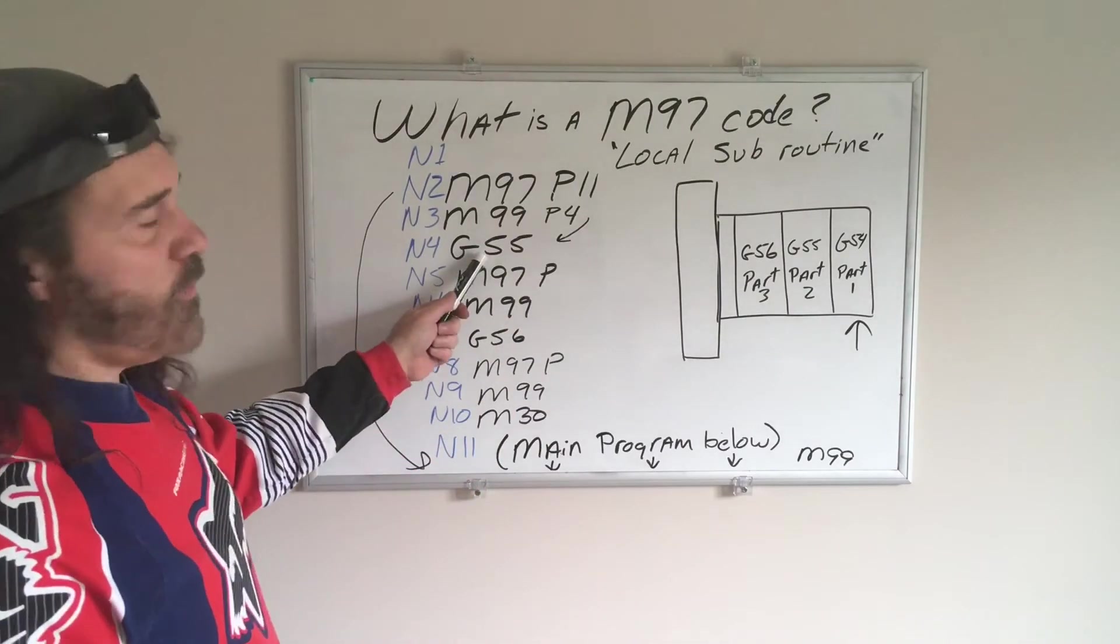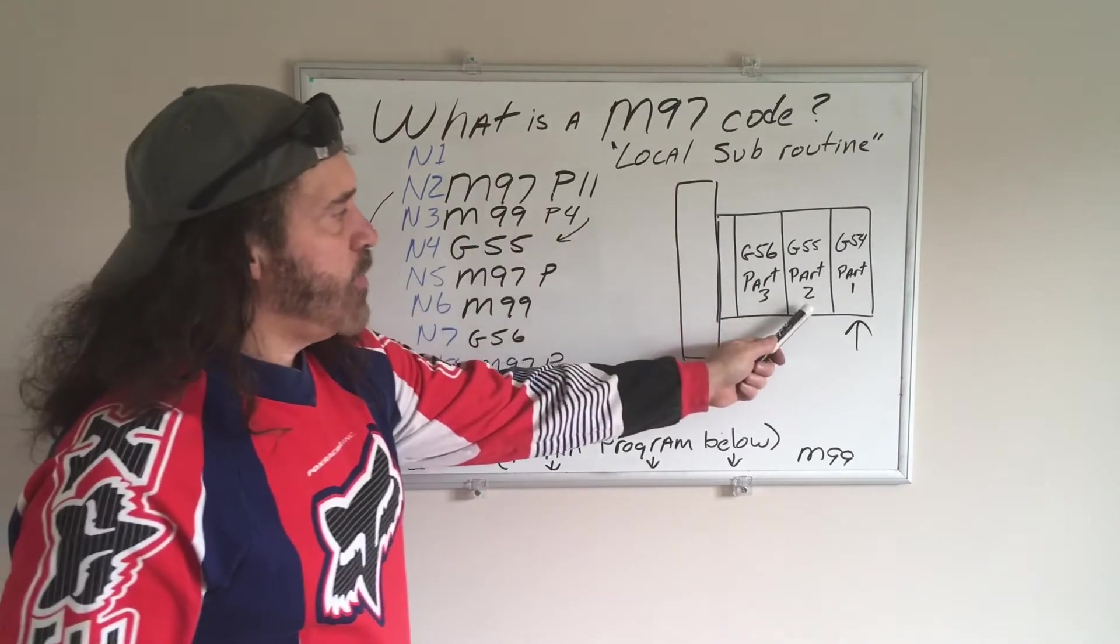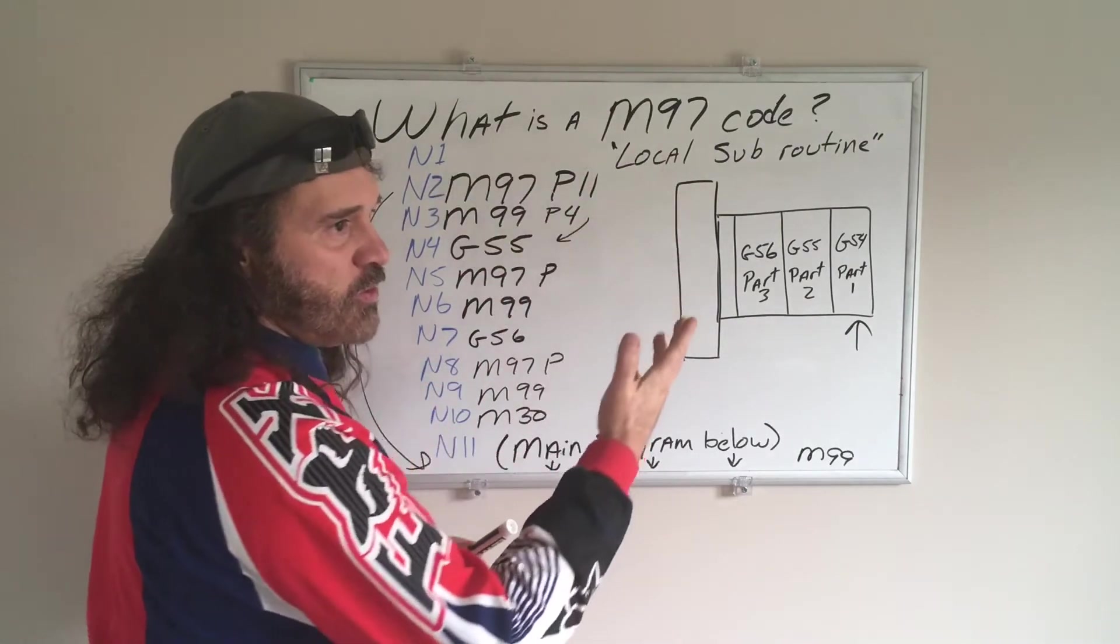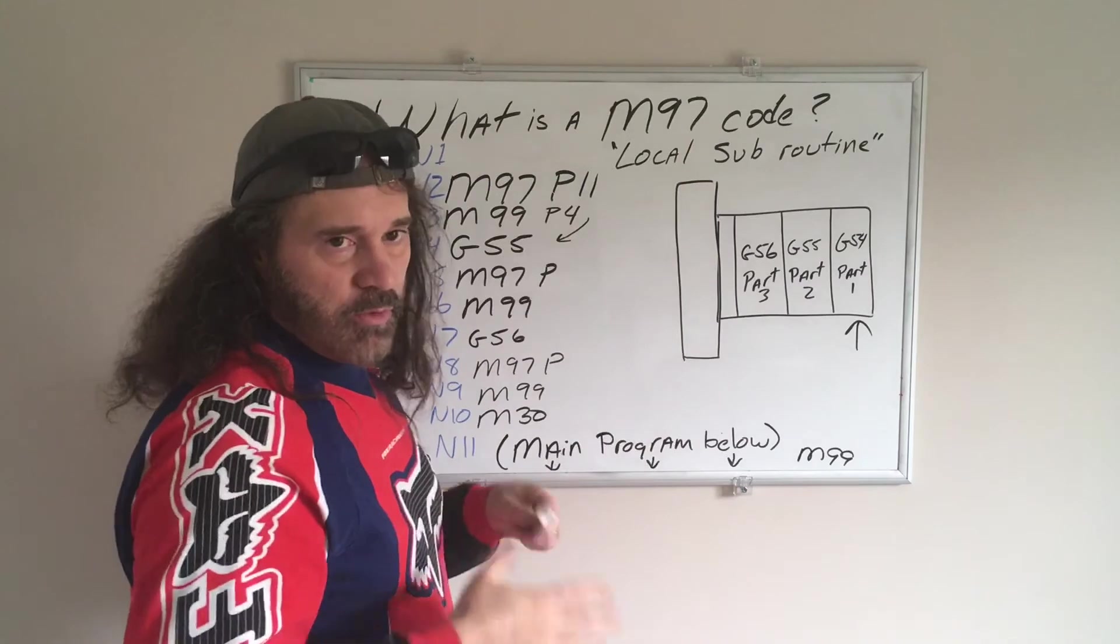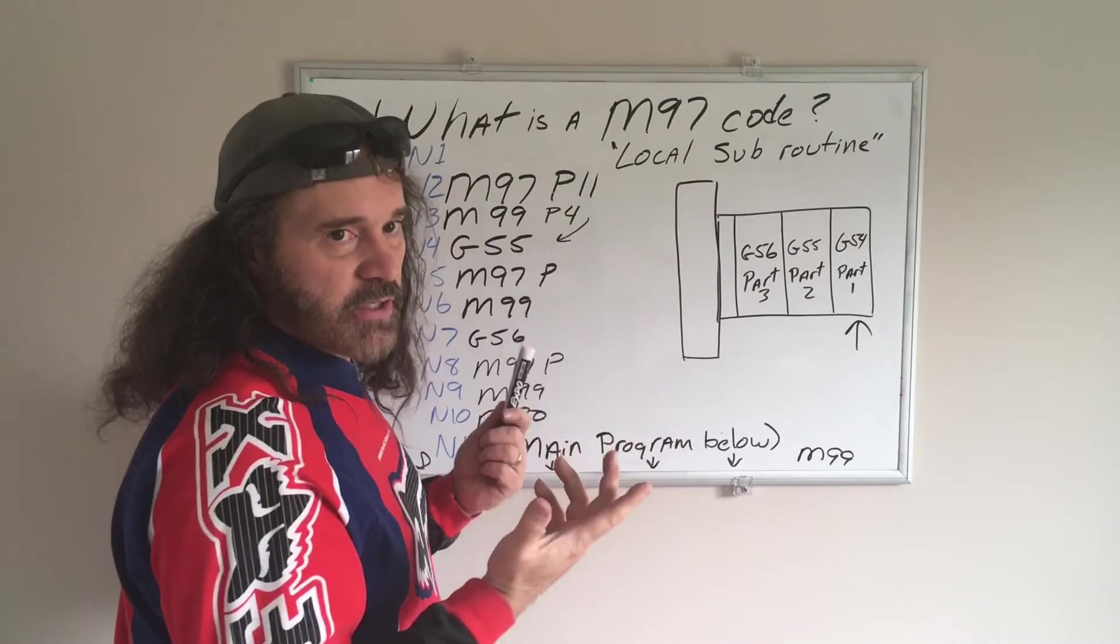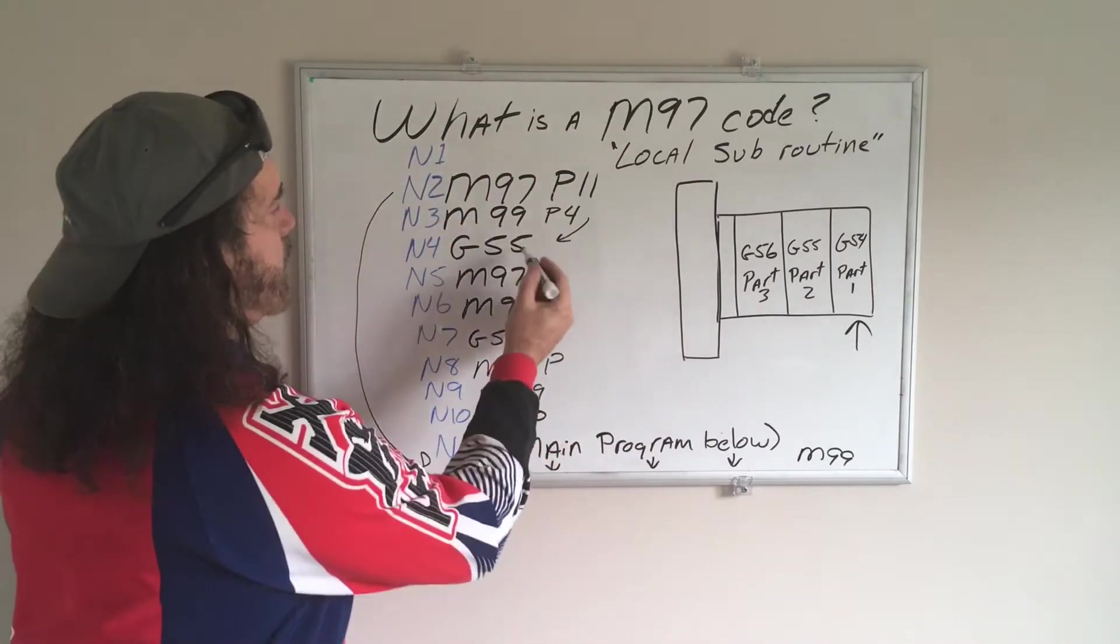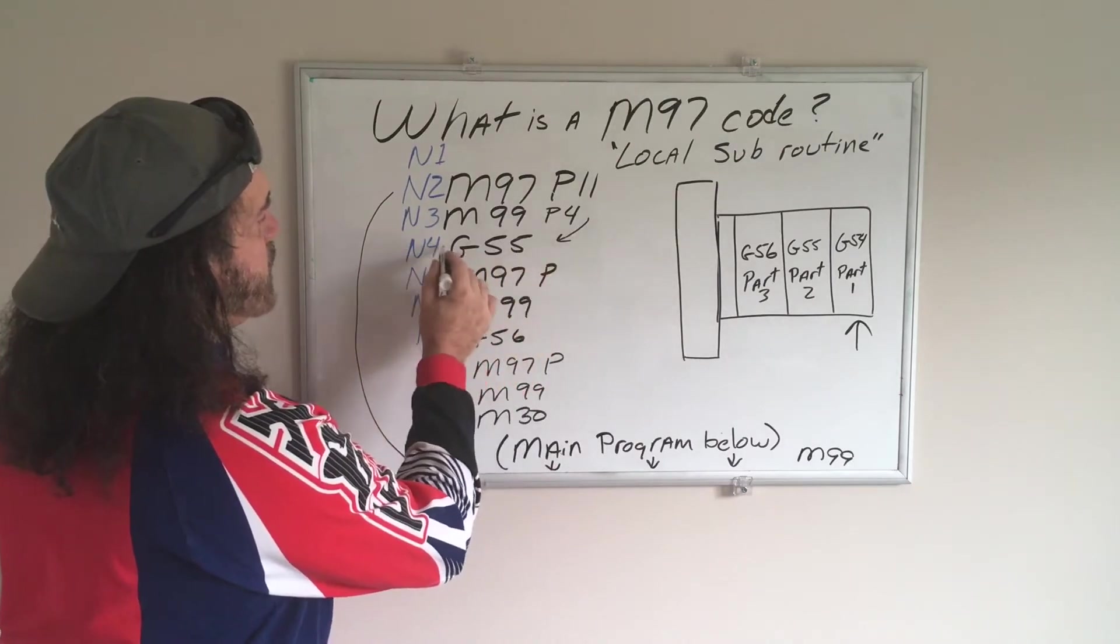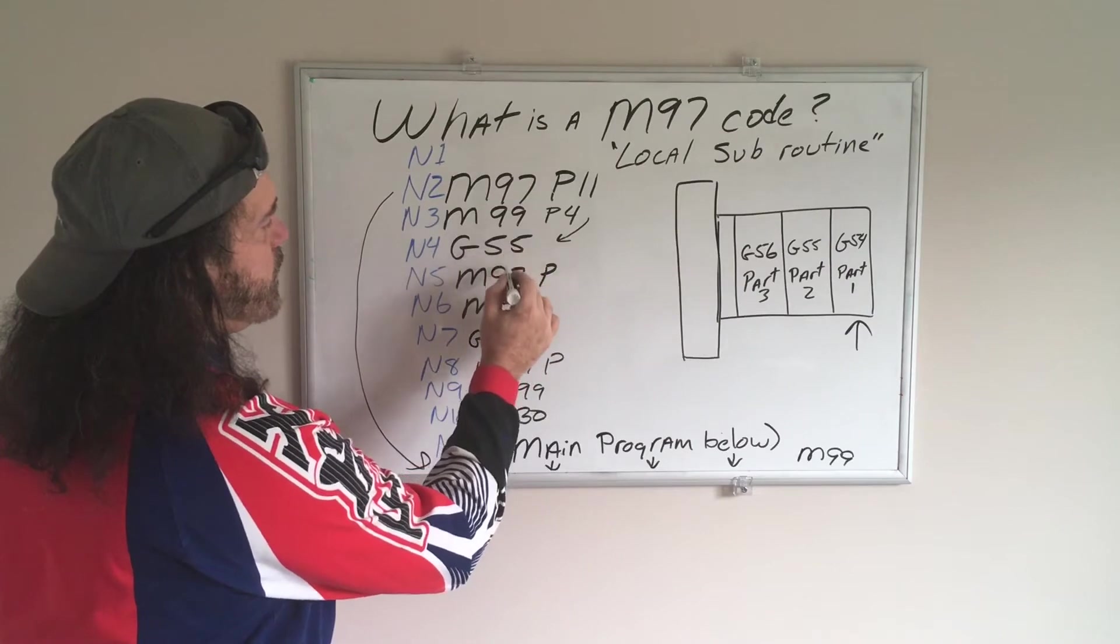So now, we activate G55, which is part number 2. So in offsets, you come up with whatever value you need and enter that in offsets. And then from there on out, it's going to continue on. So that line's done now, it's going to continue on here.